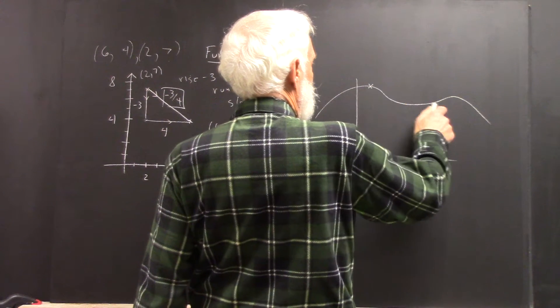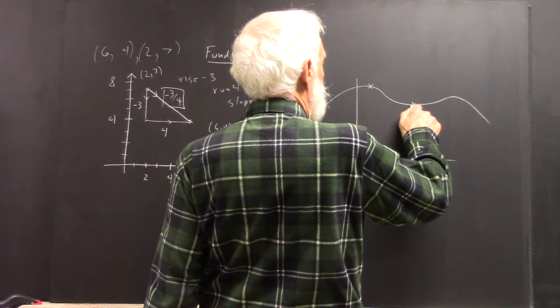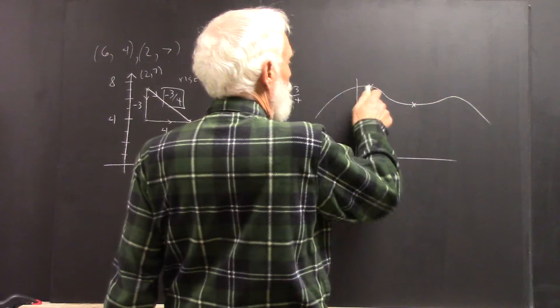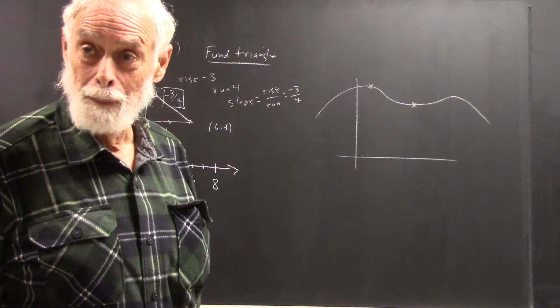And we take two points on the graph. Two points on the graph, we do the fundamental triangle. Once you've got two points, you get the fundamental triangle.